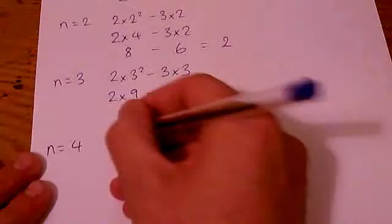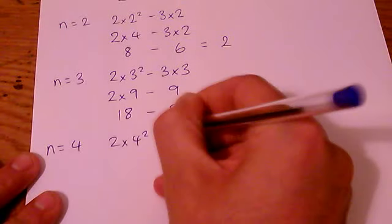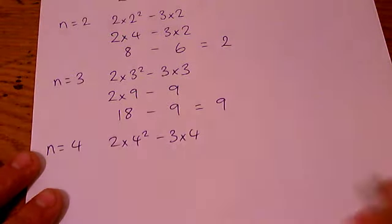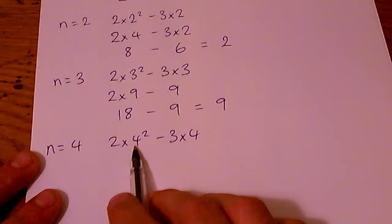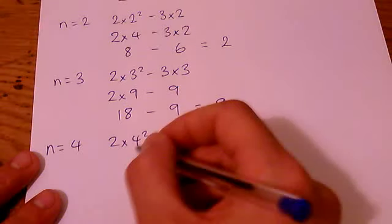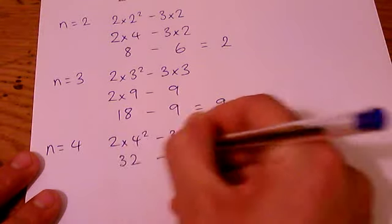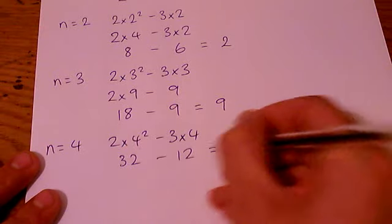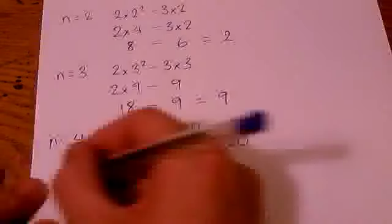When n is 4 you're going to get that's 2 16s minus 12, that's 32 minus 12, which is 20.